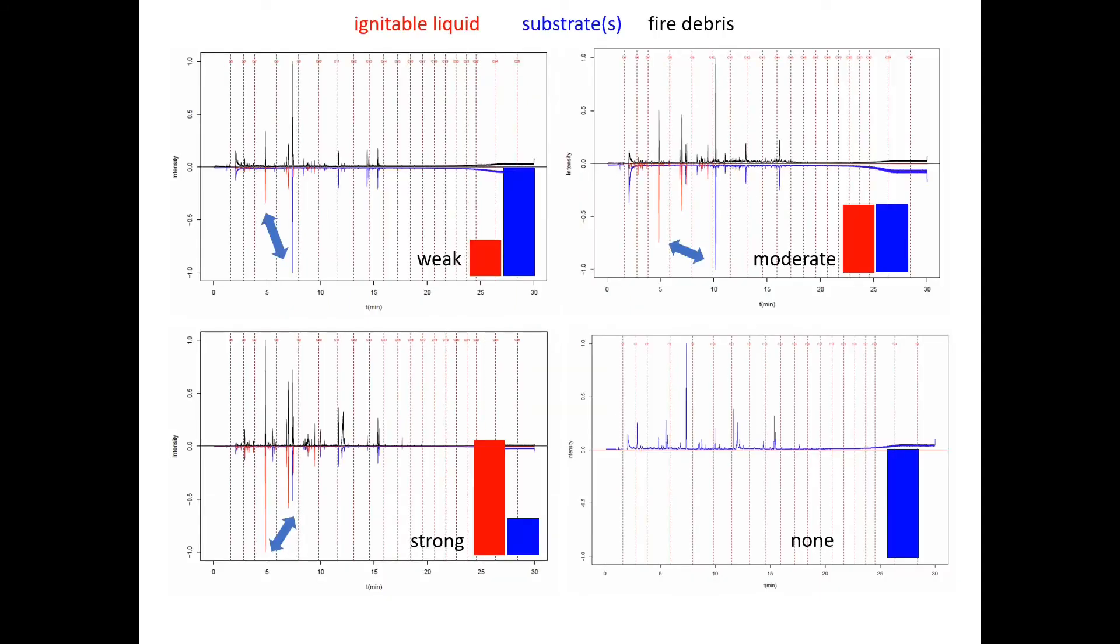The ratio of ignitable liquid solution to substrate solution in the collection of fire debris samples varies. The ratio is based on the relative peak height of the most abundant compound in the substrate total ion chromatogram and the peak height of the most abundant compound in the ignitable liquid total ion chromatogram. The various ratios with ignitable liquid residues are weak, moderate, and strong. Those fire debris samples with no ignitable liquid are designated as none.